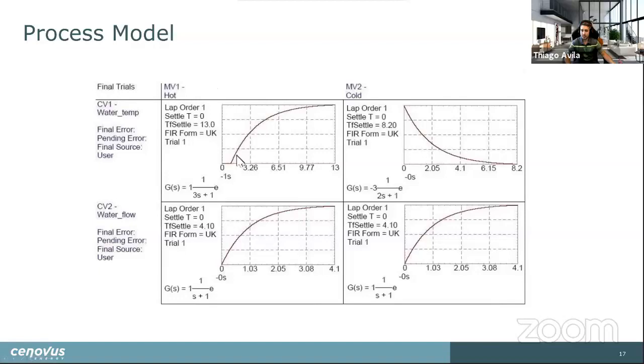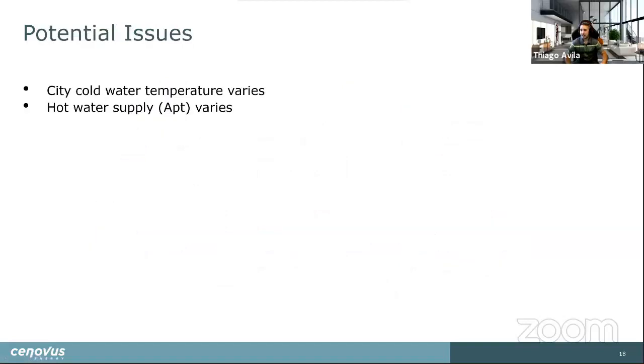And the way to read this is for a one unit change in the position of the hot water valve, you're going to get a one unit change in the temperature. And then similarly on MV2, which is the cold water valve, if you open up the cold water valve, you're going to reduce the combined temperature. But in both cases, you're going to increase the total flow coming out of the shower head.